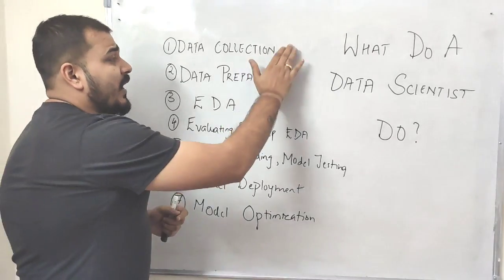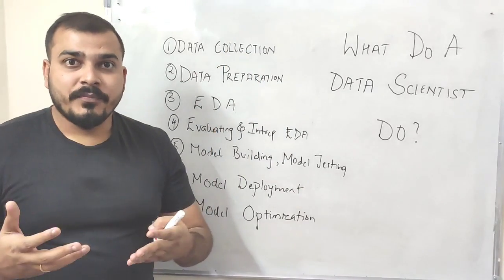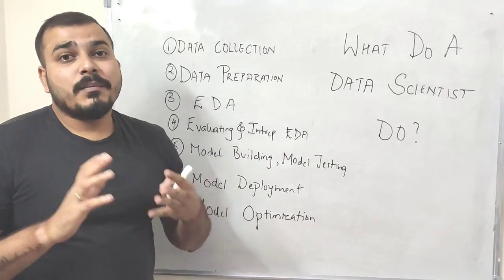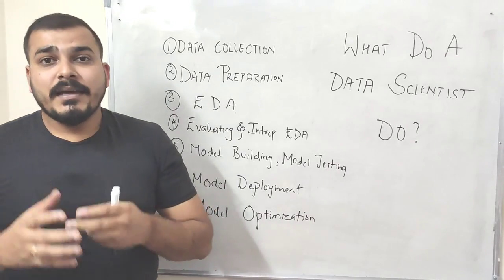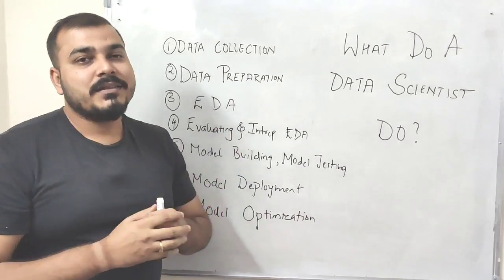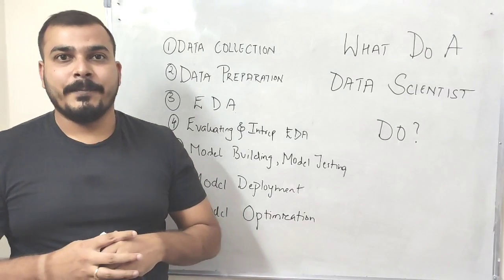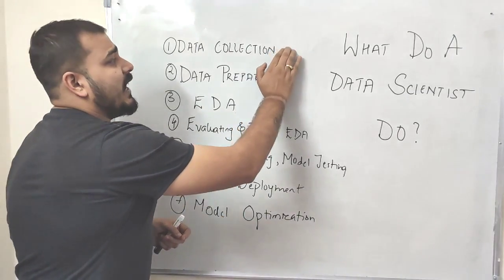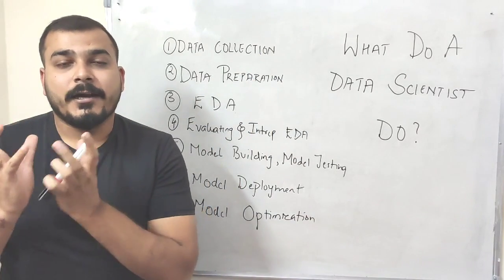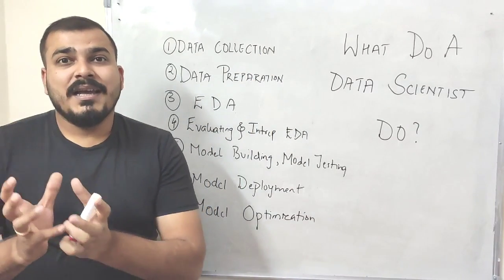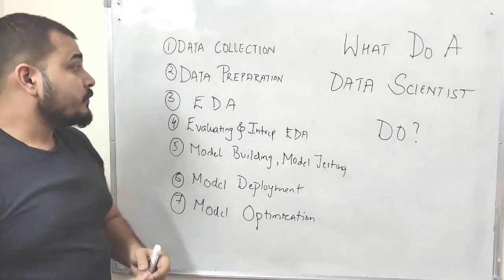Some third-party APIs are paid and some are free. With web scraping, if the website provides that facility, we can extract all the data. Whatever data is collected in the data collection stage is raw data — it will not be clean data, it is basically raw.